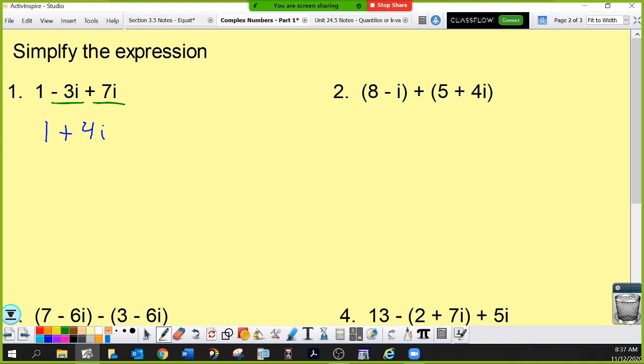For number 2, the reason why I'm using parentheses is because I'm showing you that I am adding two complex numbers. I'm adding the complex number 8 minus i to the complex number 5 plus 4i. So that's why there's parentheses there. But in reality, what you're going to do is you're just going to pretend there's no parentheses and you're going to combine your like terms. And you just make sure that your result is written in standard form. The 8 and the 5 are like terms. 8 plus 5 is 13. And negative 1i plus 4i. Negative 1 plus 4 is 3. So plus 3i.